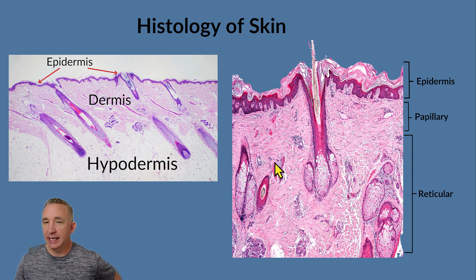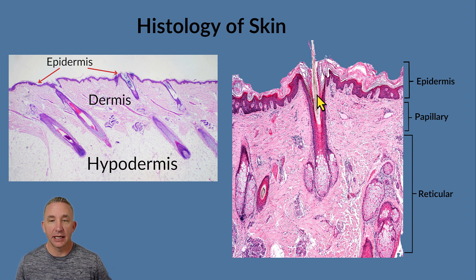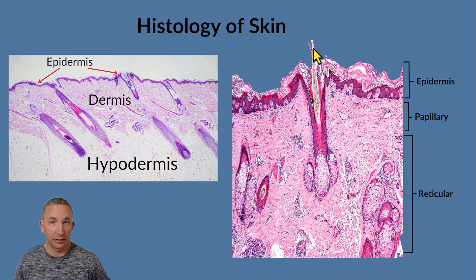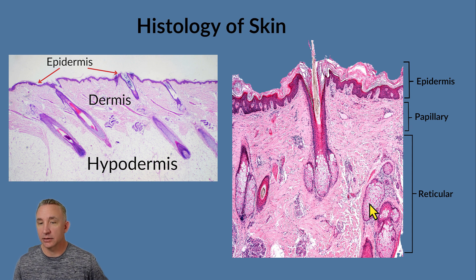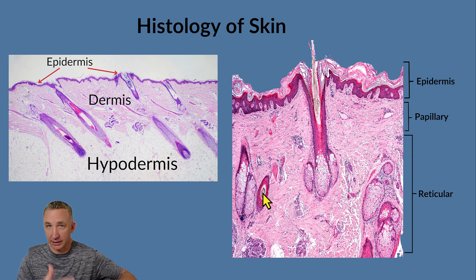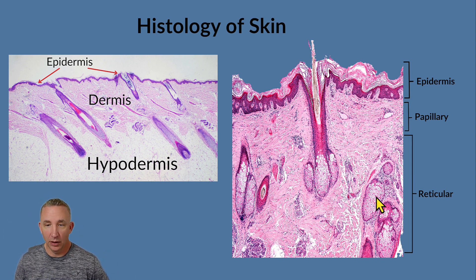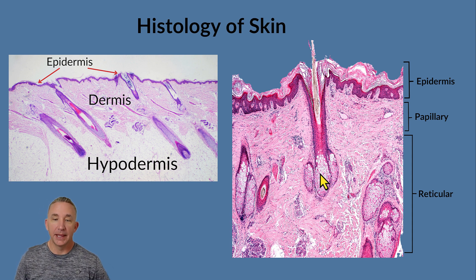Other structures visible include hair. Inside the skin, hair is called the root; above the skin it's called the shaft. Wrapping around the hair are bubbly structures — these are sebaceous glands. The appearance varies depending on how the tissue was sectioned, whether cut horizontally or at an angle.